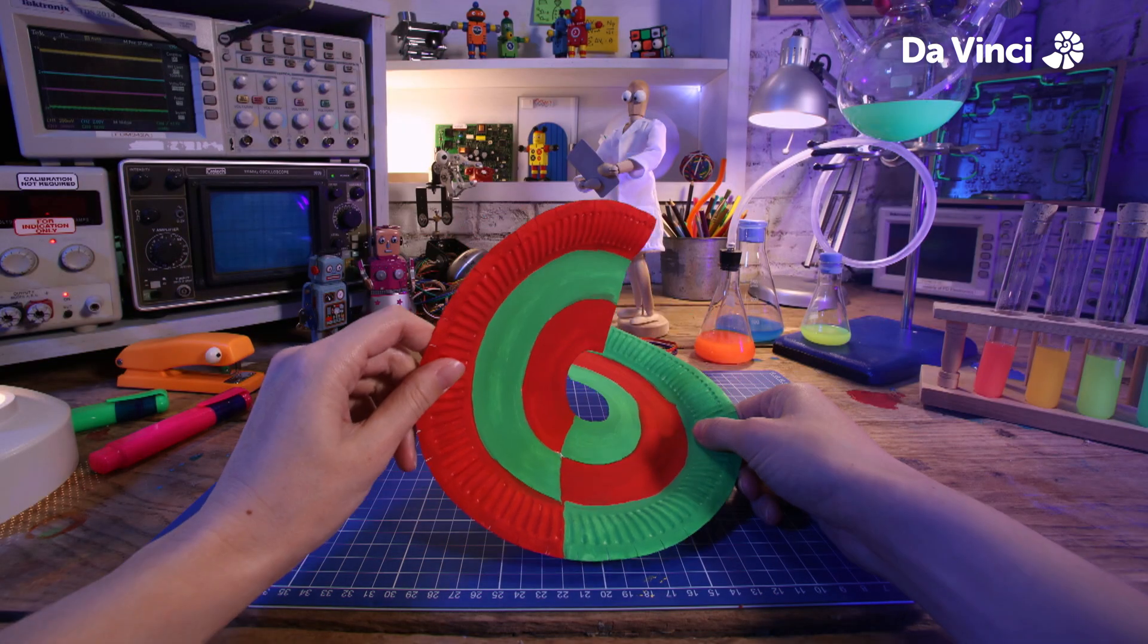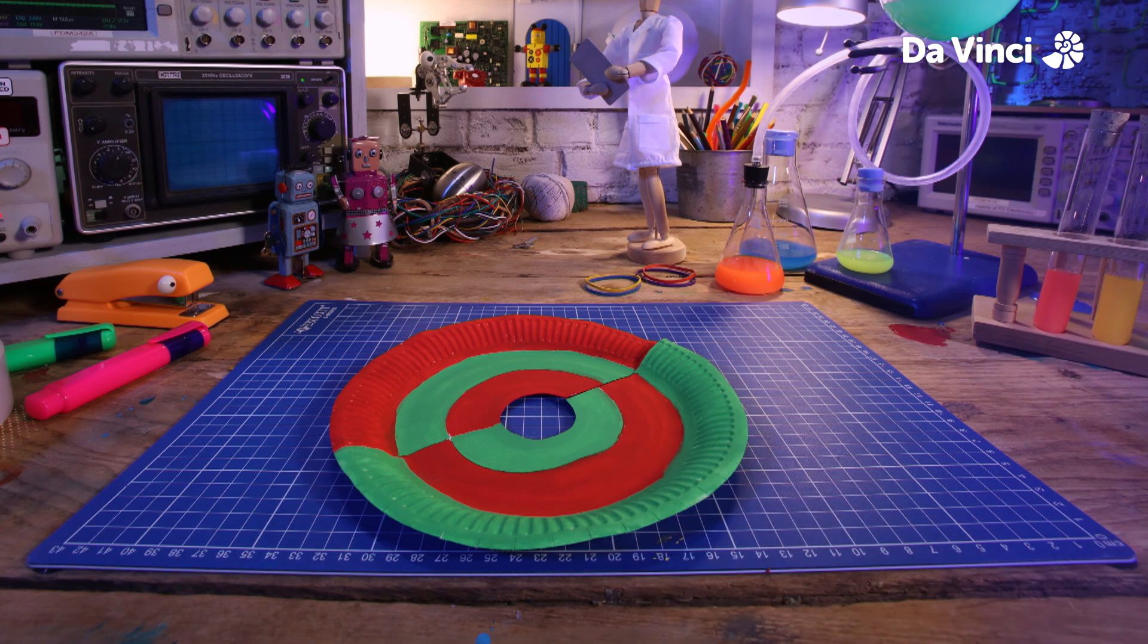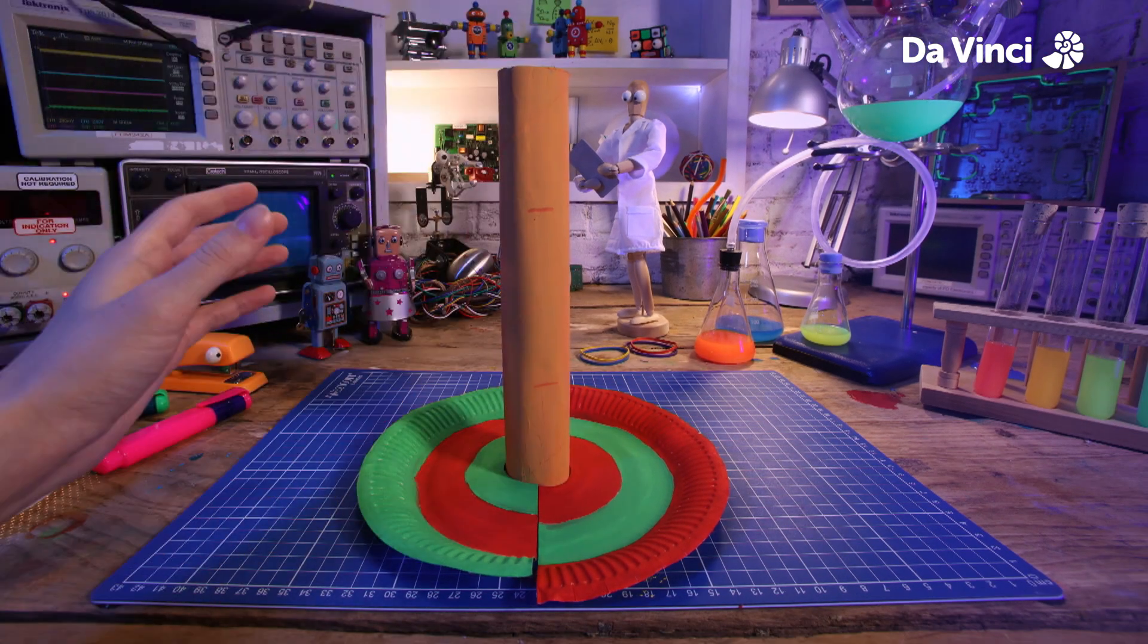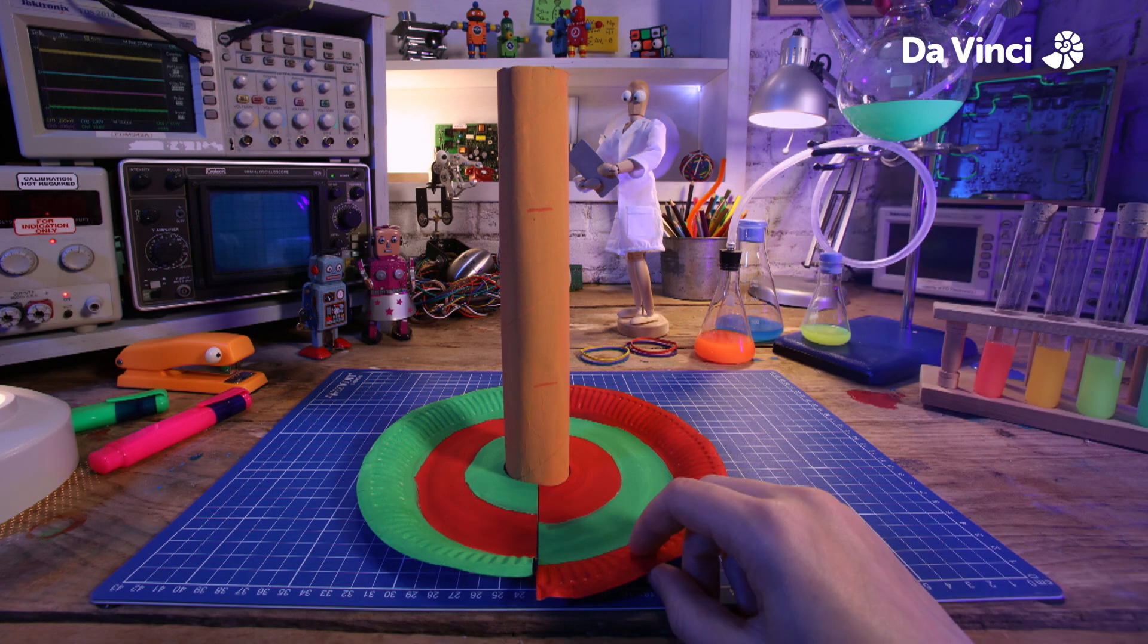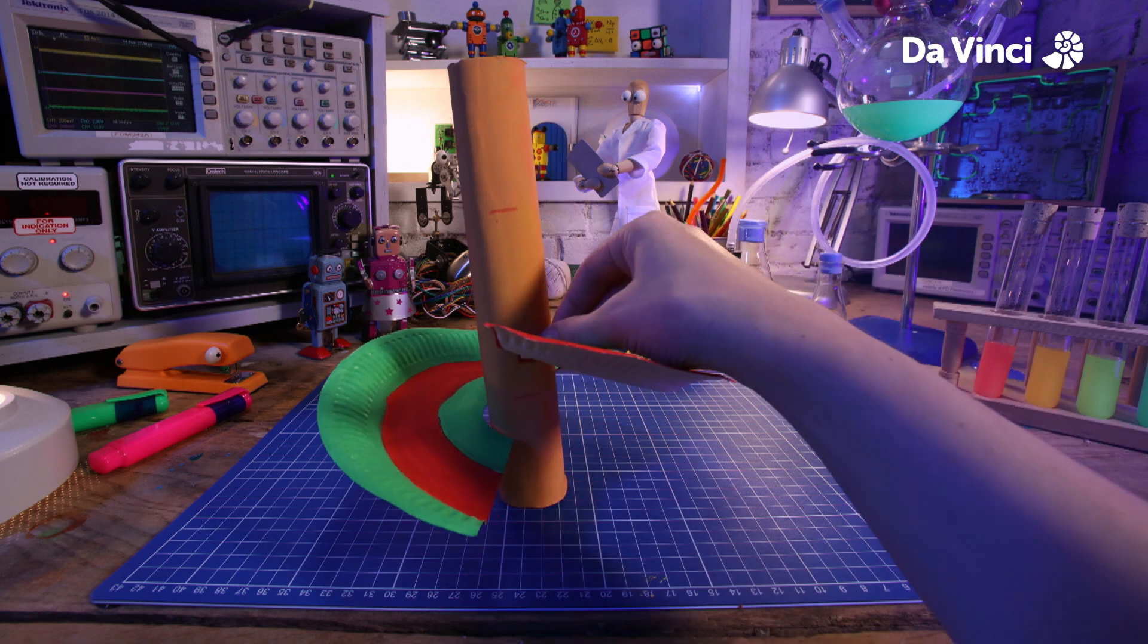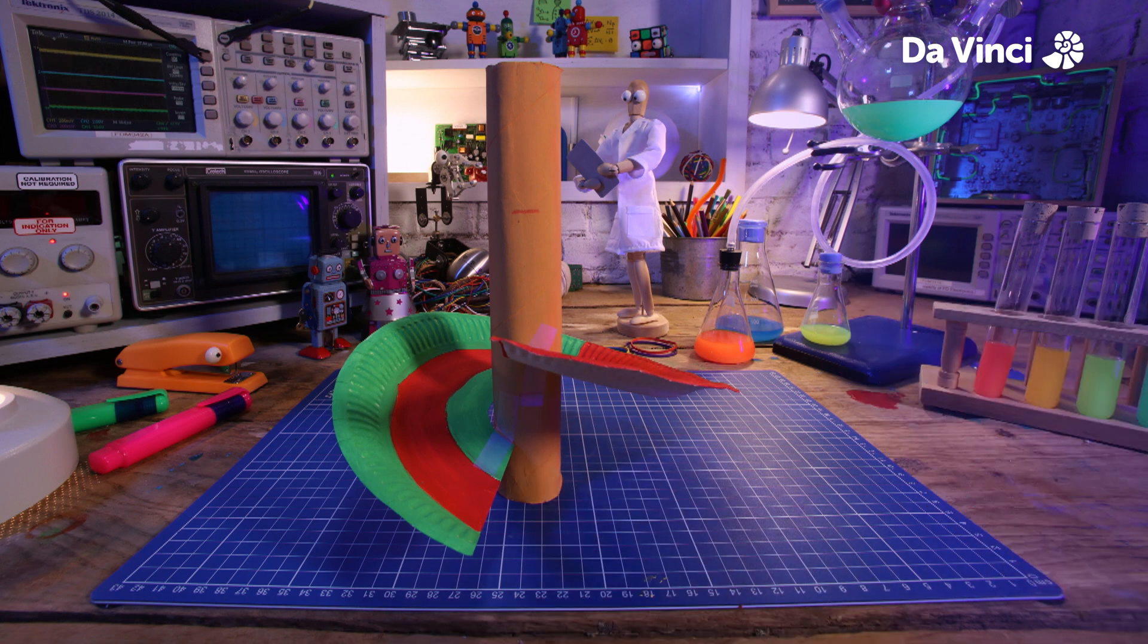Time to take our first section. Put it down like this and put your tube right in the middle. Now if we lift this bit up and place a little bit of tape here, here, and here, it'll stay in place.